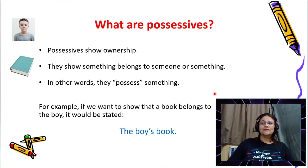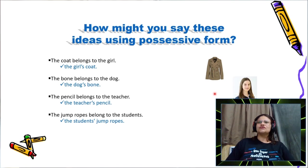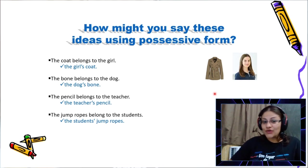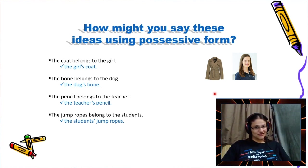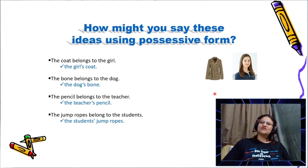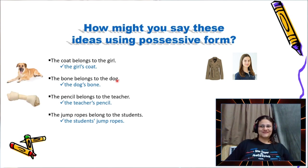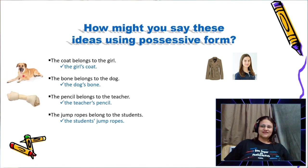Let's see the rules. How might you say these ideas using possessive form? The coat belongs to the girl. The possessor is the girl, and what is possessed is the coat. So I can say the girl's coat. Another example: the bone belongs to the dog. So I can say the dog's bone.